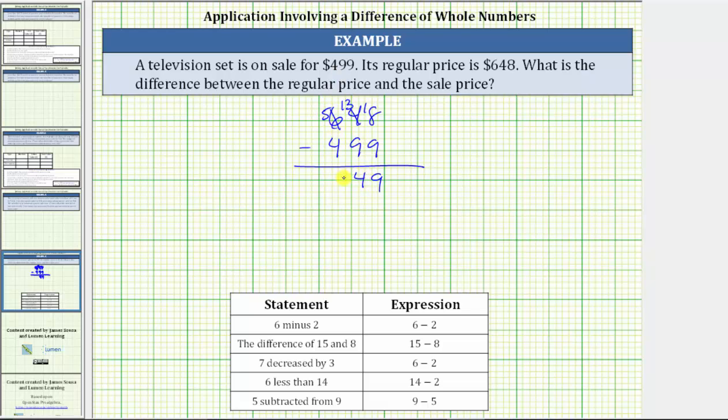In the hundreds, 5 minus 4 is 1. The difference is 149, which means the difference between the regular price and sale price is $149.